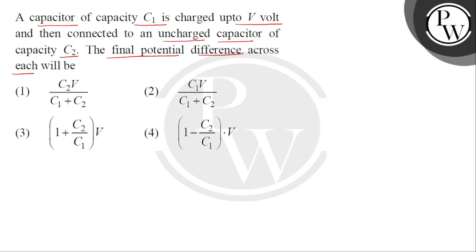So children, we are given first a capacitor C1, which is charged up to V volt. And now this capacitor is connected to an uncharged capacitor, which is C2. We have to find the final potential difference across each.